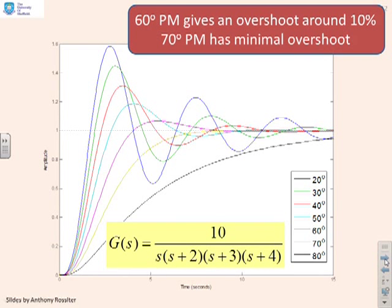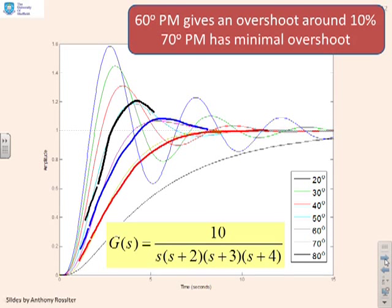Next example, now fourth order, but you see again, a very similar result. With 70 degrees, I get this response with minimal overshoot—slightly cautious. With 60 degrees, I get about 10% overshoot. At 50 degrees, I get around 20%. Again, 60 to 70 degrees seems about right.